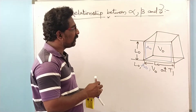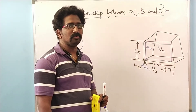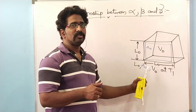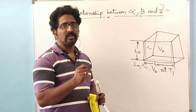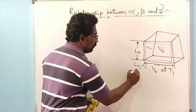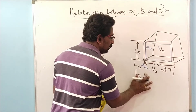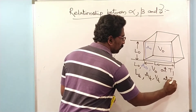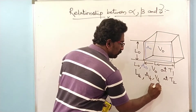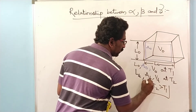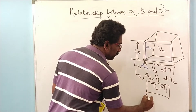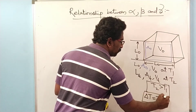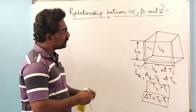Now if we subject this cube to a higher temperature T2, which is greater than T1, then its length, area, and volume are all going to vary. Let the new length, area, and volume at temperature T2 be denoted by L-T, A-T, and V-T respectively. The change in temperature is given as delta T = T2 minus T1.